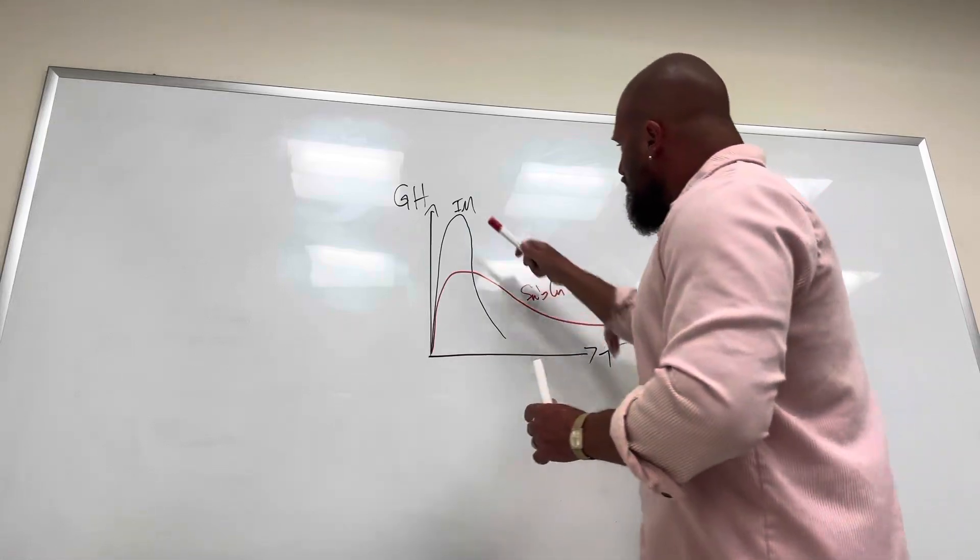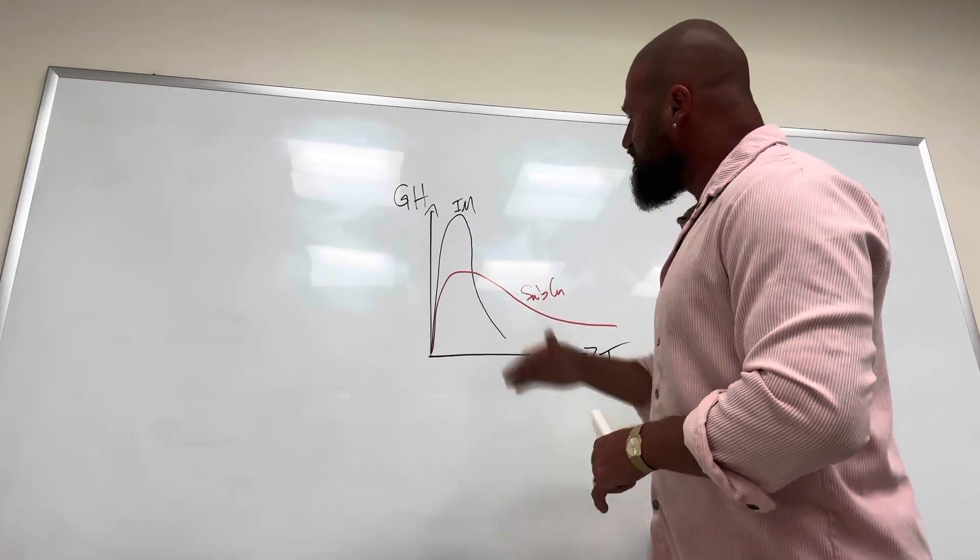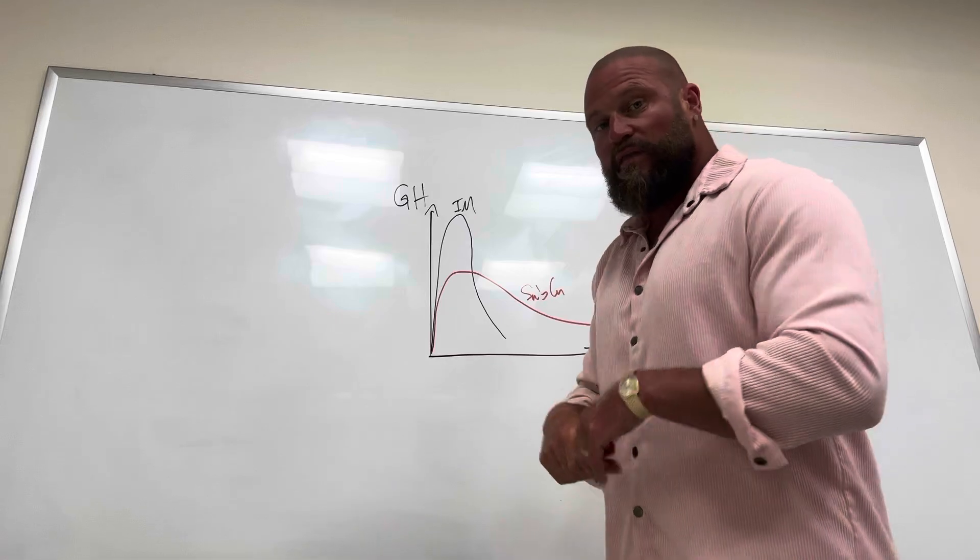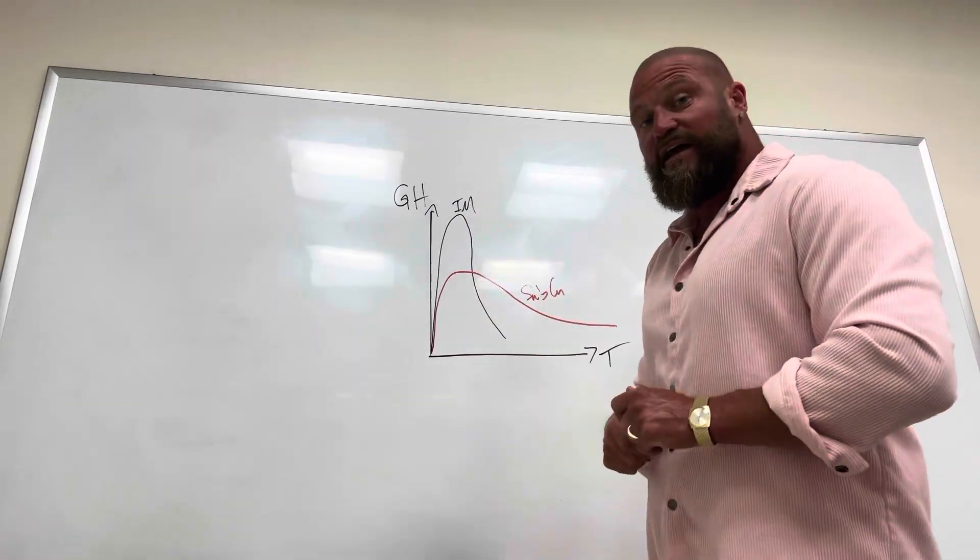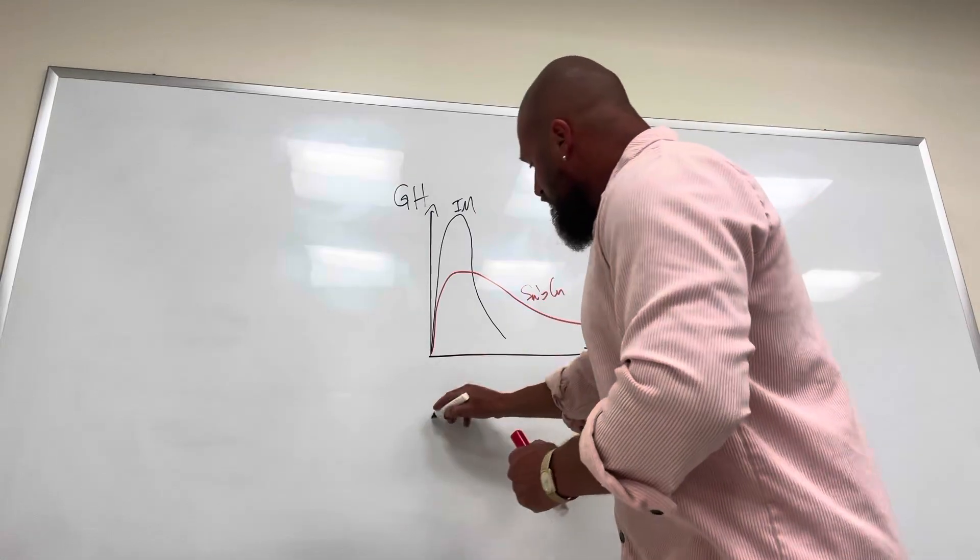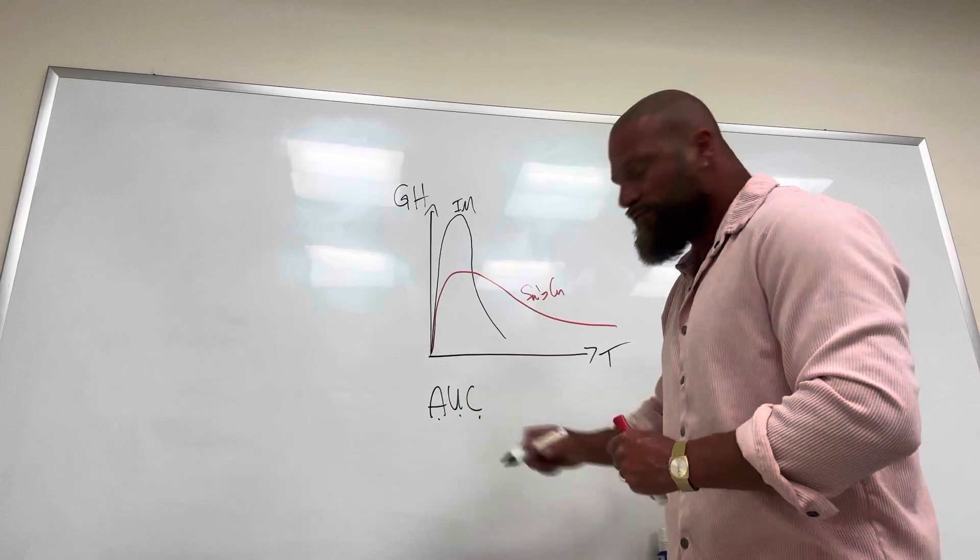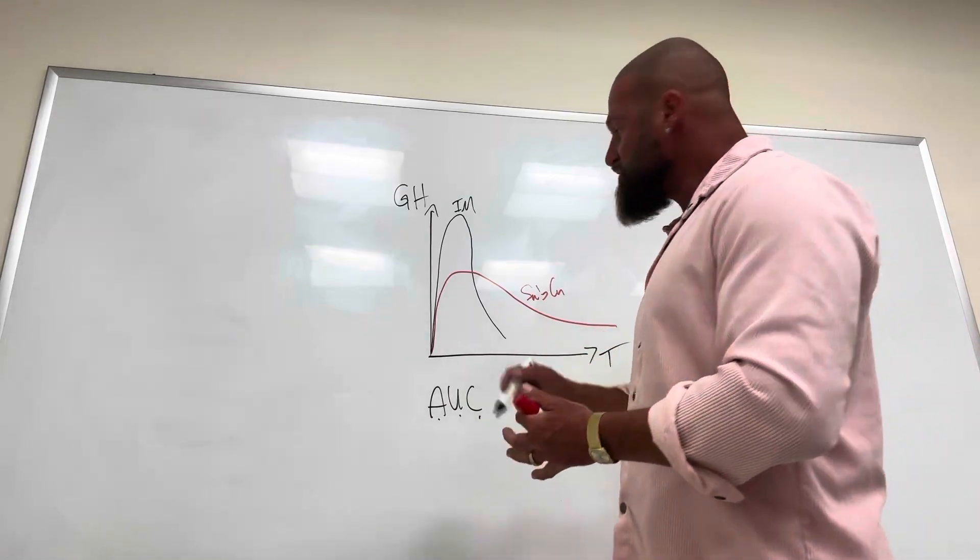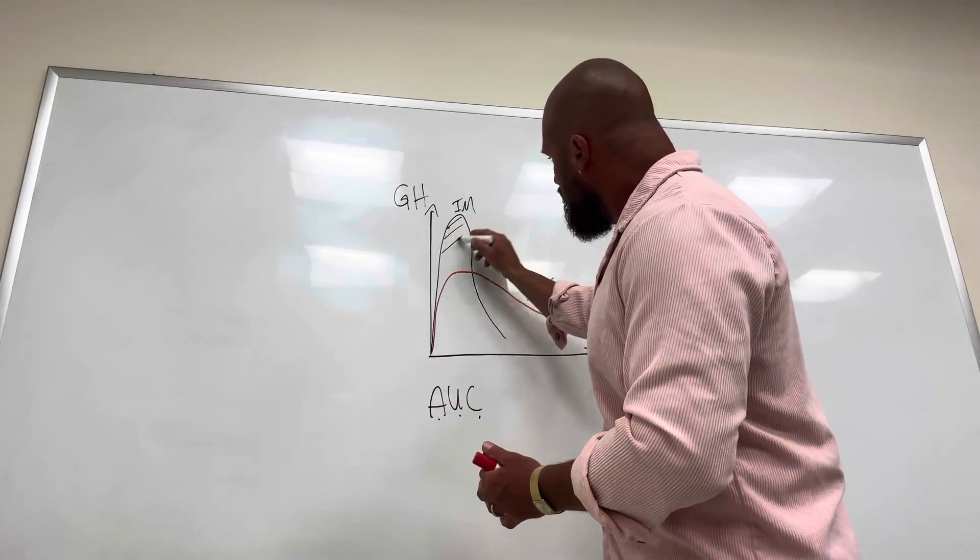So at one glance, we can see that intramuscular injection gives us a bigger peak. But here the important thing is not the peak, it is the area under the curve, also called AUC, area under the curve. So it is simply as the name says, all this area right under the curve.